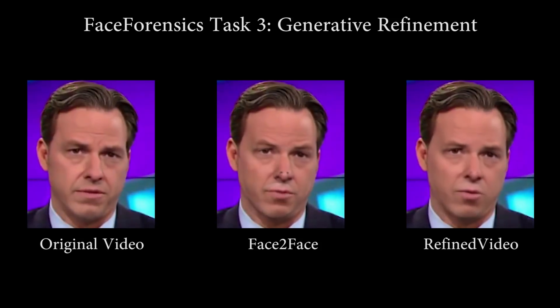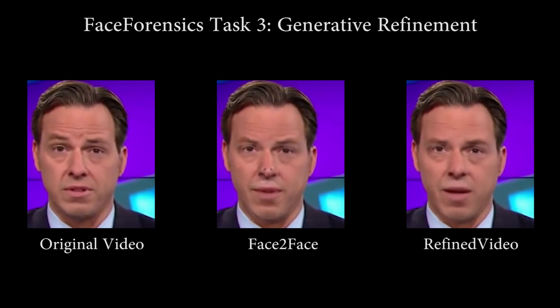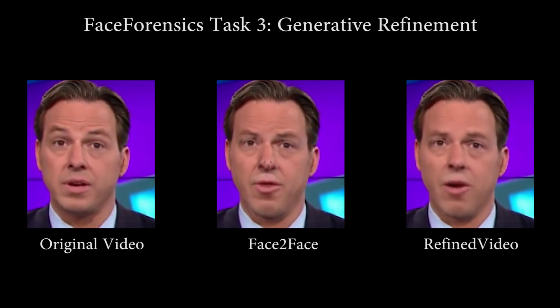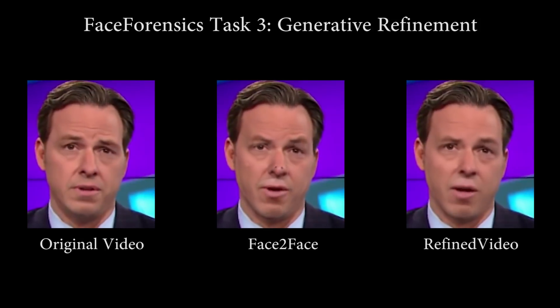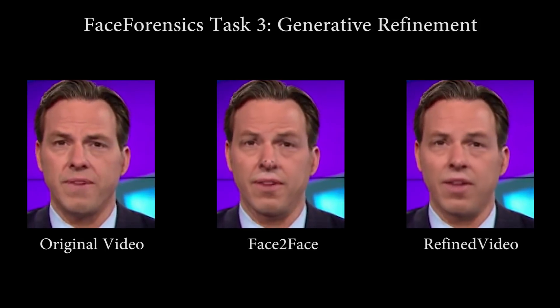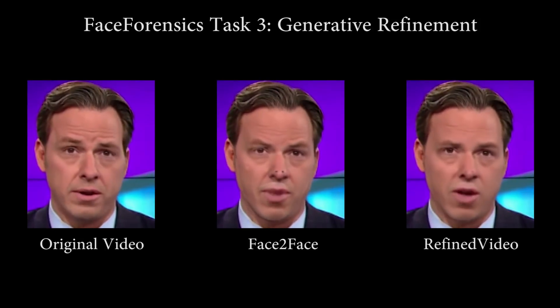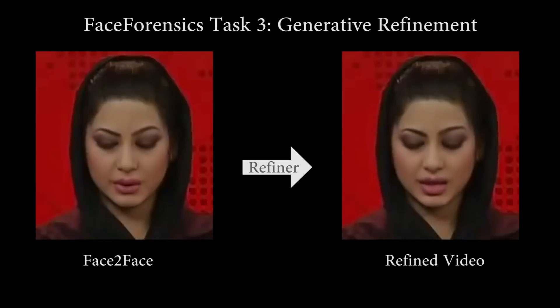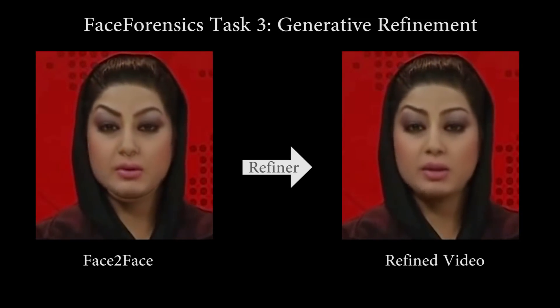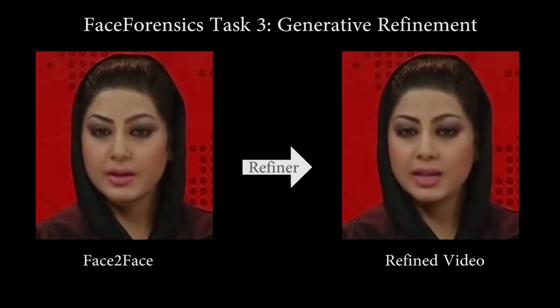We can also use our dataset for refining existing forgeries. Here, we can see that with the given ground truth of the original data, we can train an autoencoder-like network that is able to remove obvious visual artifacts of face-to-face.